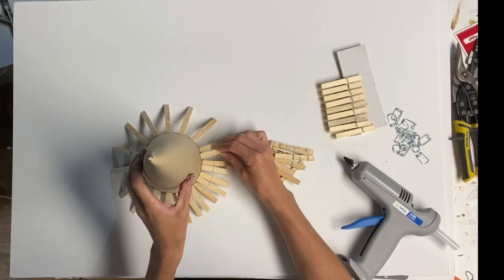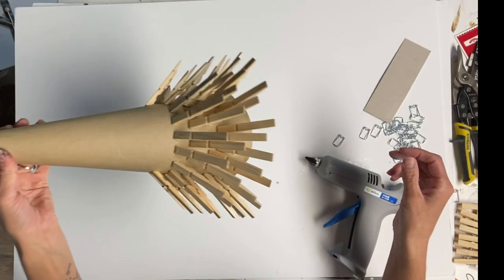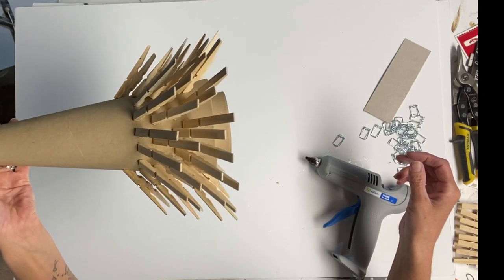Now the reason why I'm using hot glue is because you want something that is going to set very fast. And you're just going to continue this pattern along the entire tree cone.